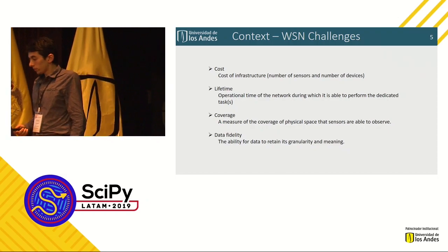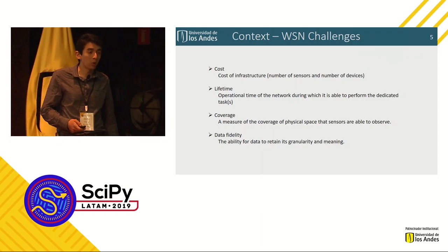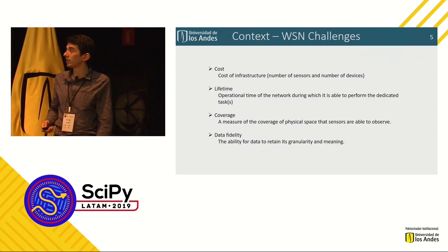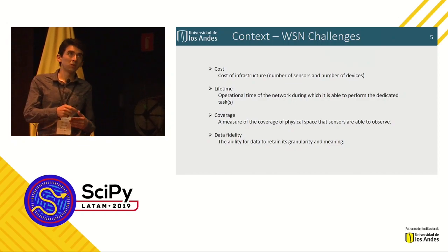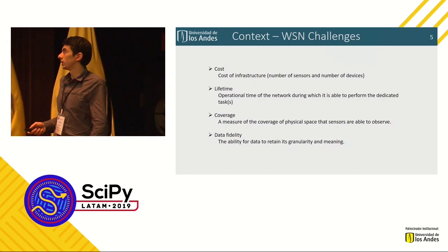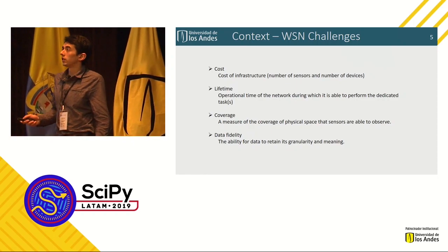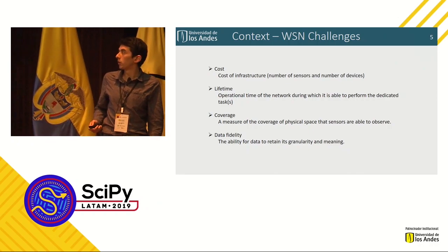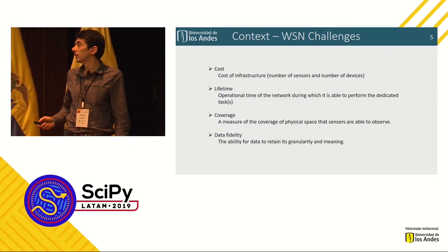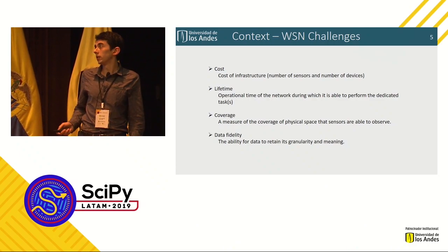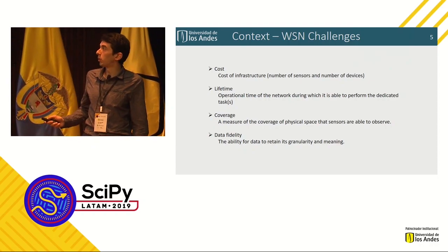The second important challenge is lifetime. Commonly, the nodes or sensors in a wireless sensor network are powered by batteries, so it's very important that power consumption be very low in order to achieve a high lifetime for the wireless sensor network. The third challenge is coverage — the physical space that the sensors are able to monitor. And finally, data fidelity: the ability for data to retain its granularity.